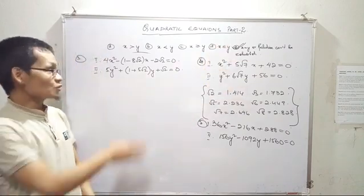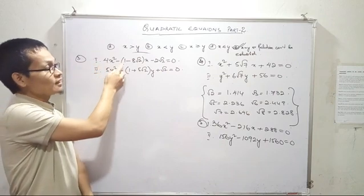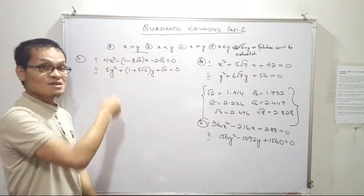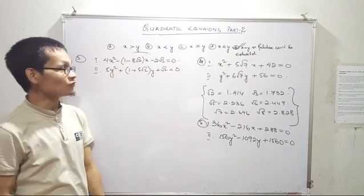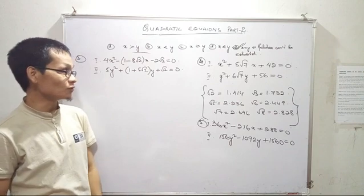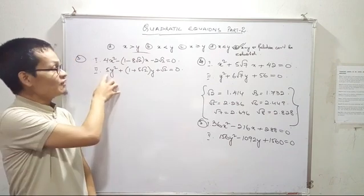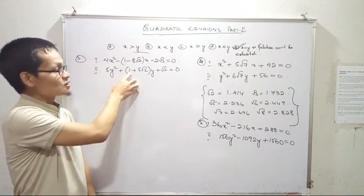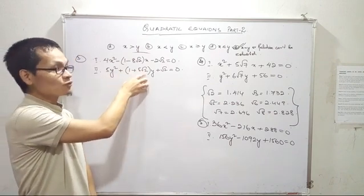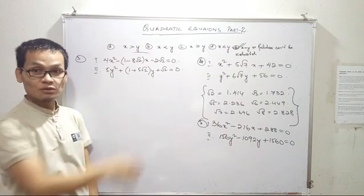The first equation is 4x squared minus 8 root 2 times x minus 2 root 2 equals 0. The second equation is 5y squared plus 5 root 2 times y plus root 2 equals 0.